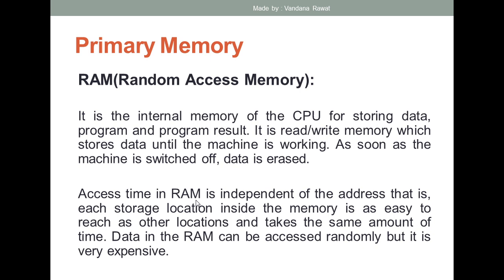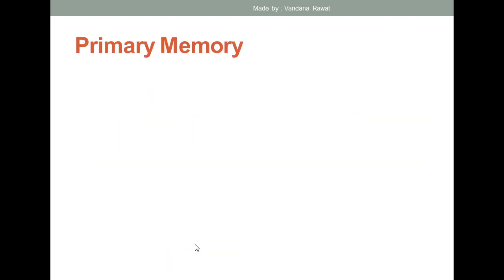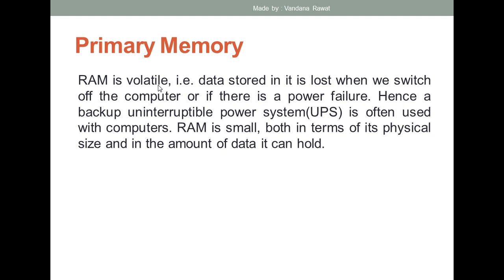If we talk about the access time in case of RAM, we can say that access time is independent of the address. This means each storage location inside the memory is as easy to reach as any other location and it takes the same amount of time. The data stored in RAM can be accessed randomly, but it is very expensive. RAM is volatile because data is not permanently saved — that is why it is called volatile memory.